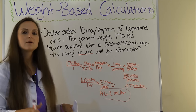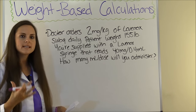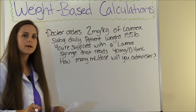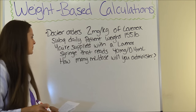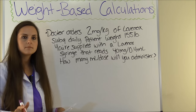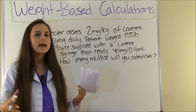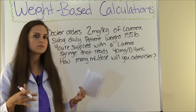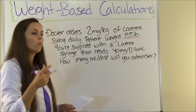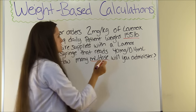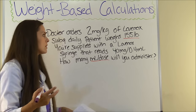This problem says: doctor orders 2 milligrams per kilogram of Lovenox subcutaneously daily. Patient weighs 155 pounds. You're supplied with a Lovenox syringe that reads 40 milligrams per 0.4 milliliters. How many milliliters per dose will you administer? With Lovenox, a lot of times you'll get a syringe and need to determine how much to push out based on the patient's weight and doctor's orders. First we'll convert the patient's weight to kilograms and figure out milliliters per dose.